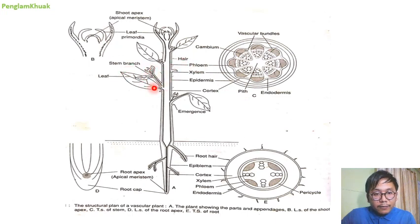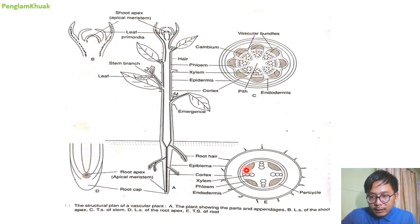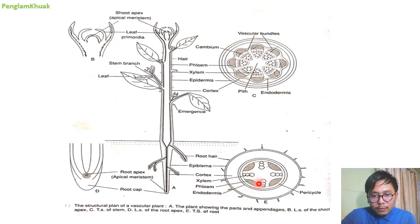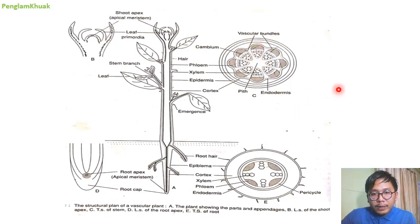Here is the stem and the leaf — this is a longitudinal section (LS), and this is also a LS of the root. If you see the internal structure of the root cut in transverse section, you will find root hair, and the outer layer that is called epiblema, then cortex, xylem, phloem and endodermis. The mode of arrangement of these vascular bundles — xylem and phloem — is radial, whereas in stem they are in conjoined vascular bundles.